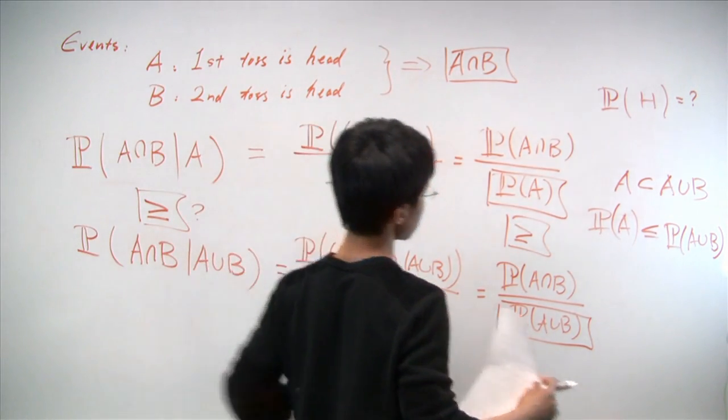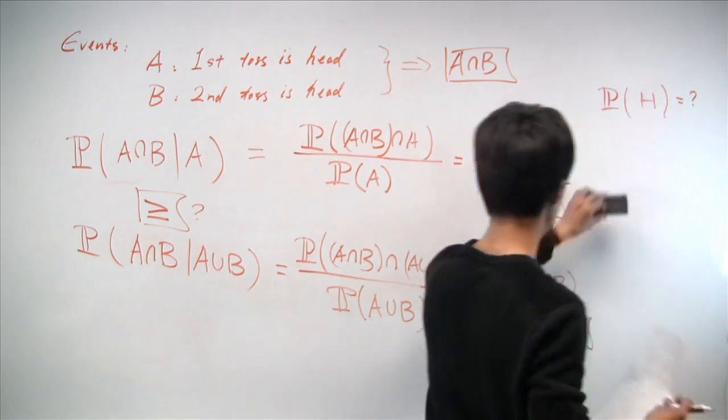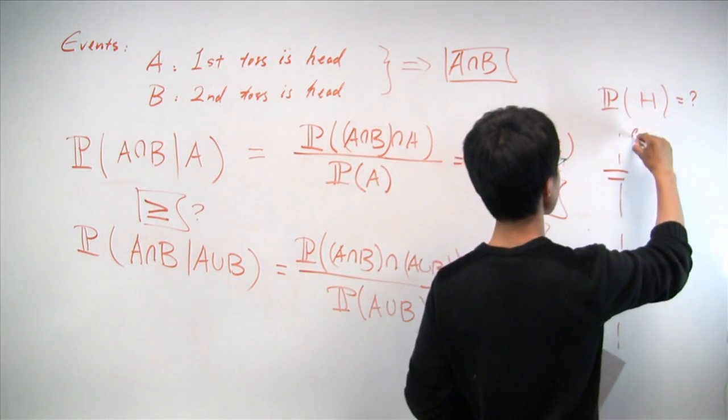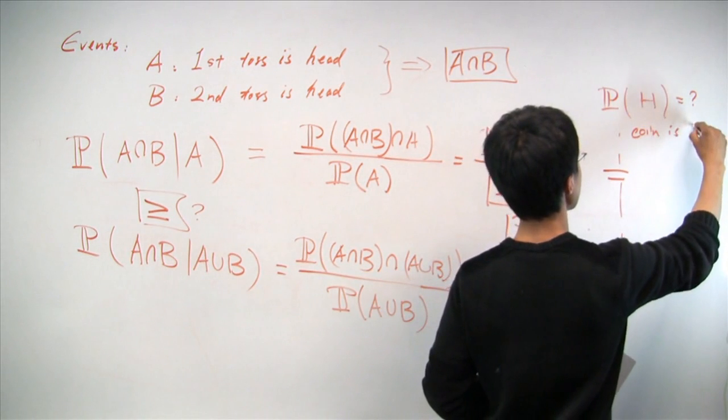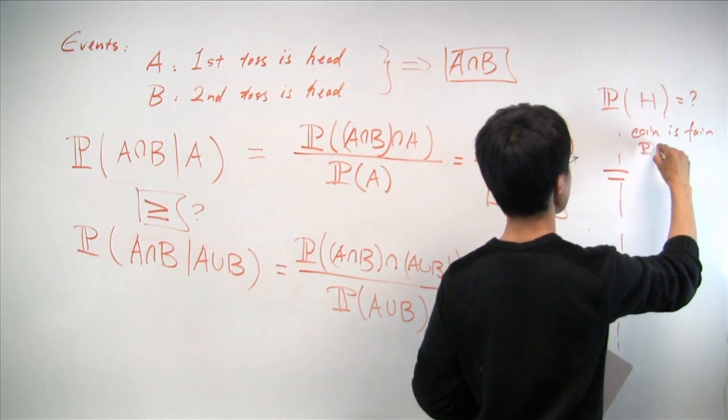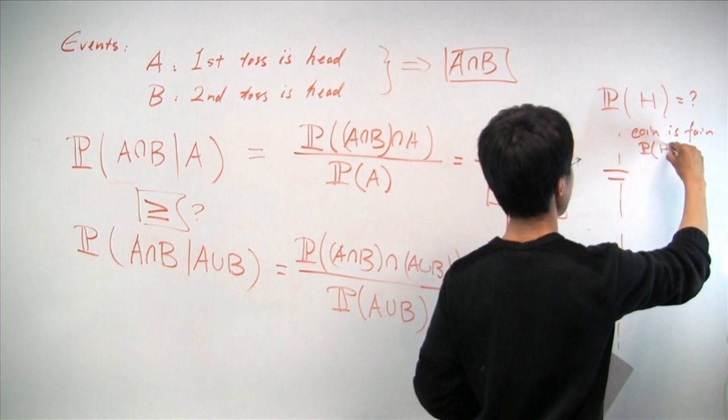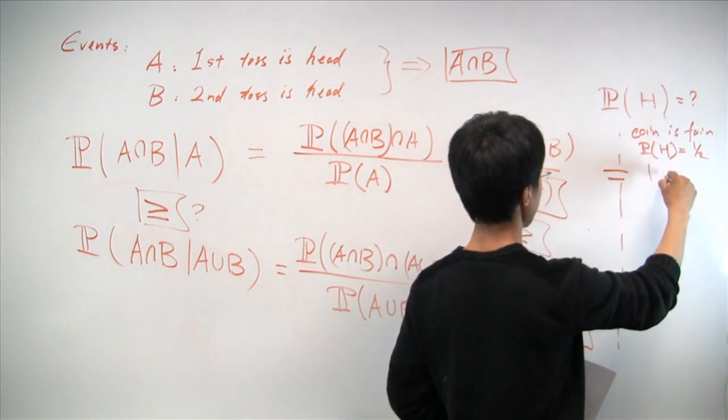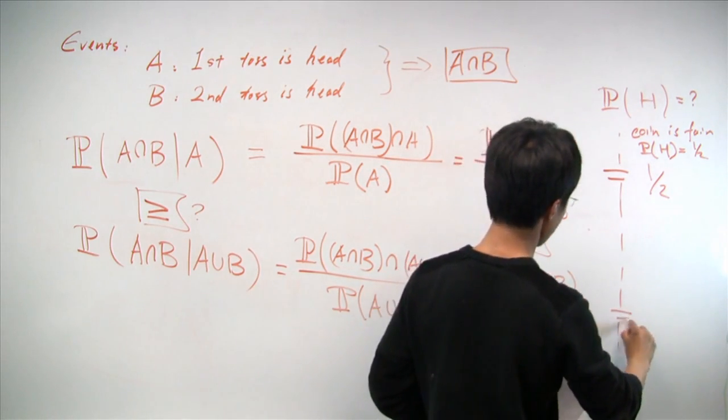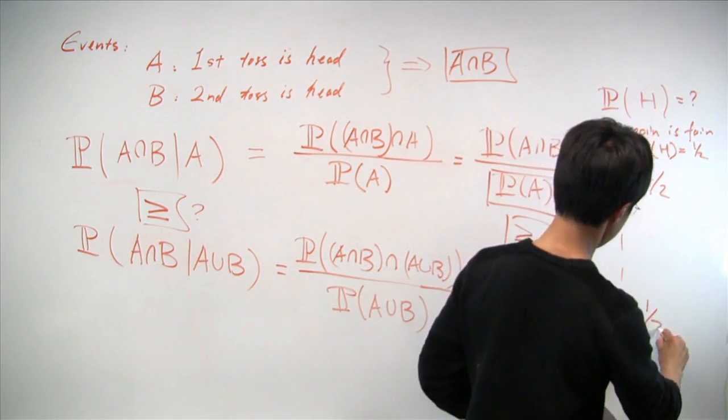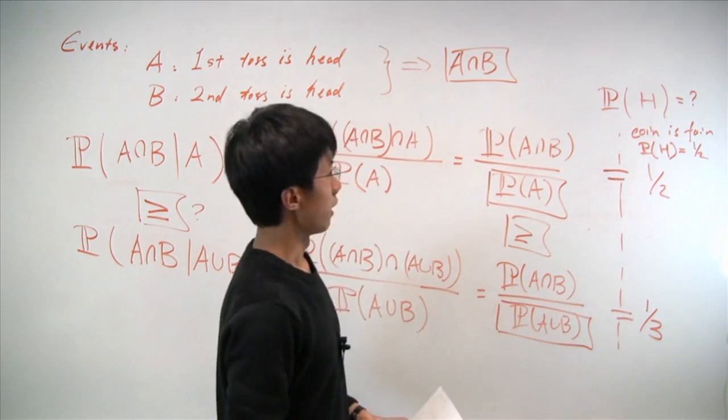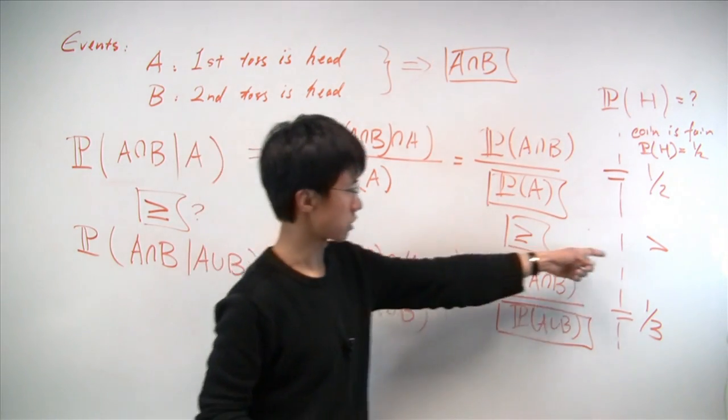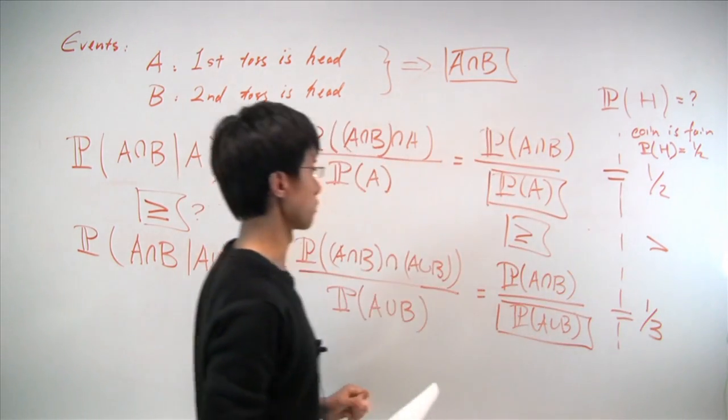But if you're really curious what happens when the coin is fair, we can plug in the numbers, and here we're assuming the coin is fair, which means probability of having a head is 1 half. Then we will see, after going through the calculations, that the first probability is 1 half, whereas the second probability is 1 third, which means in this case, the dominance actually is strict, so the first one is strictly greater than the second one.